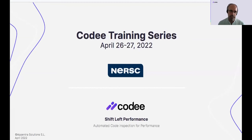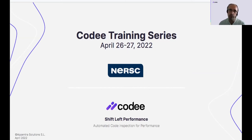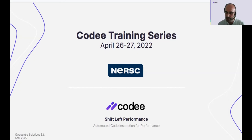Remember that shift left is about automating the inspection of the code of an application. In development software tools, you can find different tools that automate code inspection for different purposes. The differential feature of CodeE is that it automates code inspection focusing on performance — something that is key for the HPC communities or for any code running on a supercomputer like Perlmutter. This is what makes CodeE different from other tools available in the ecosystem.